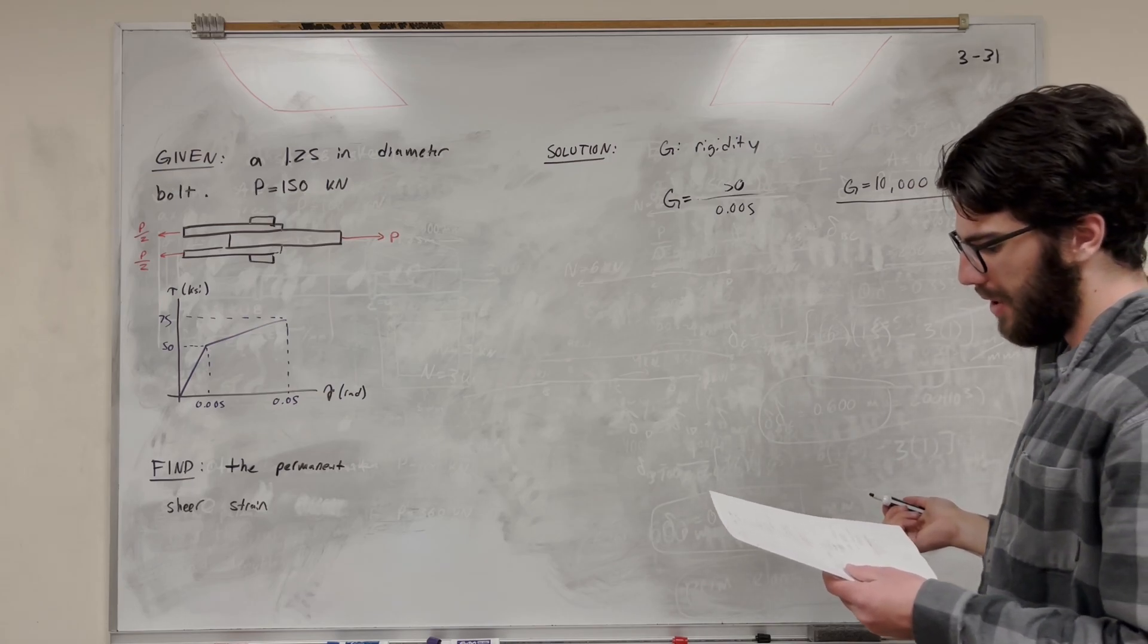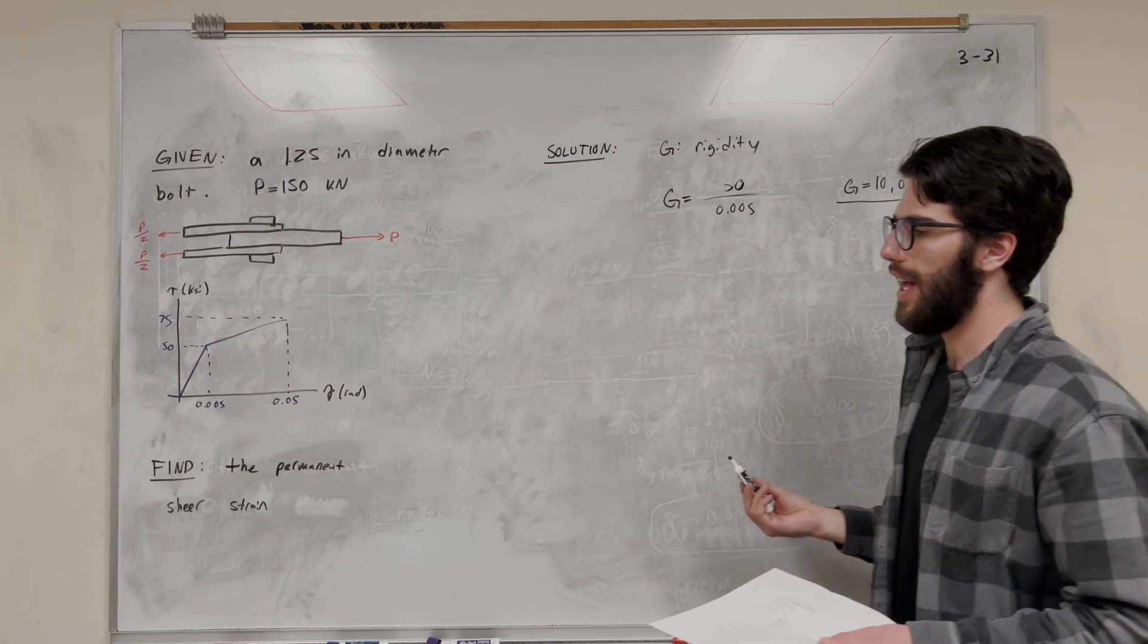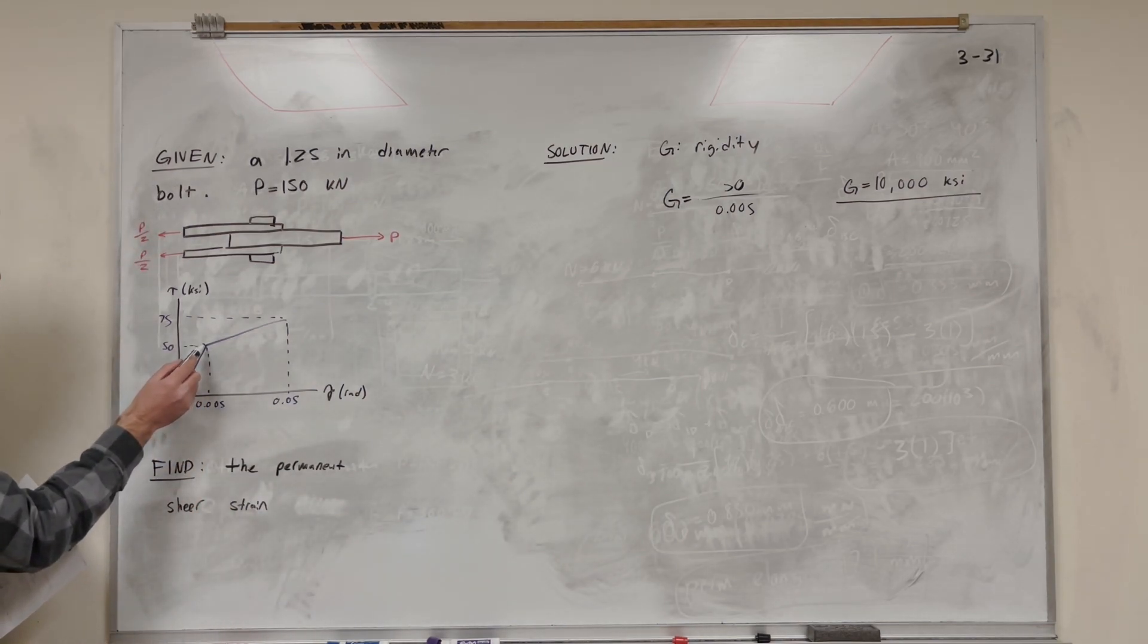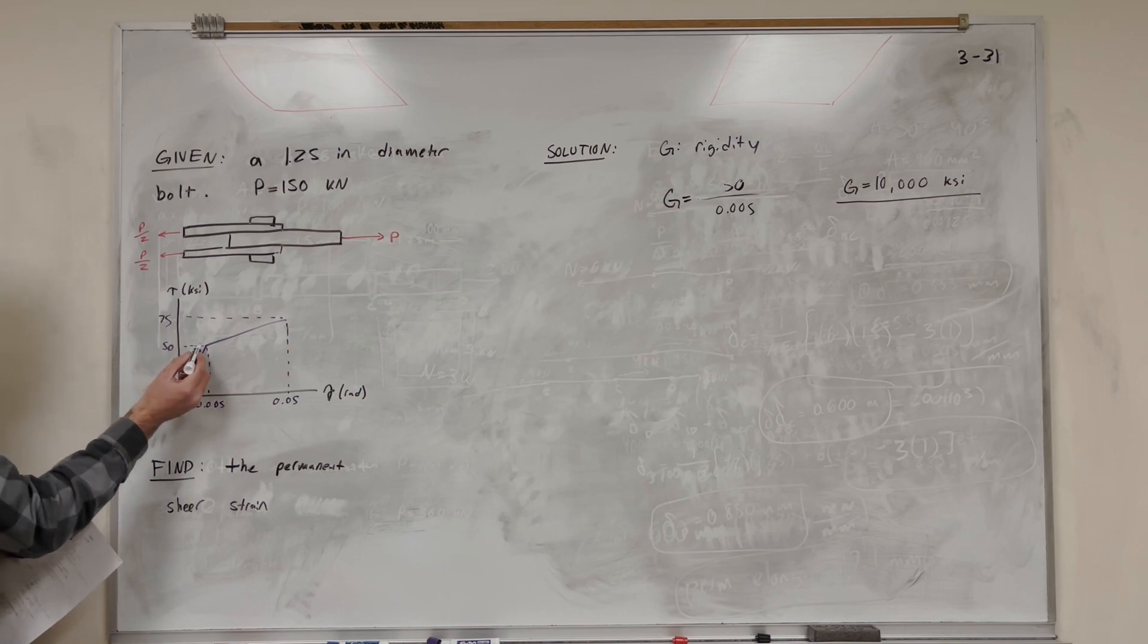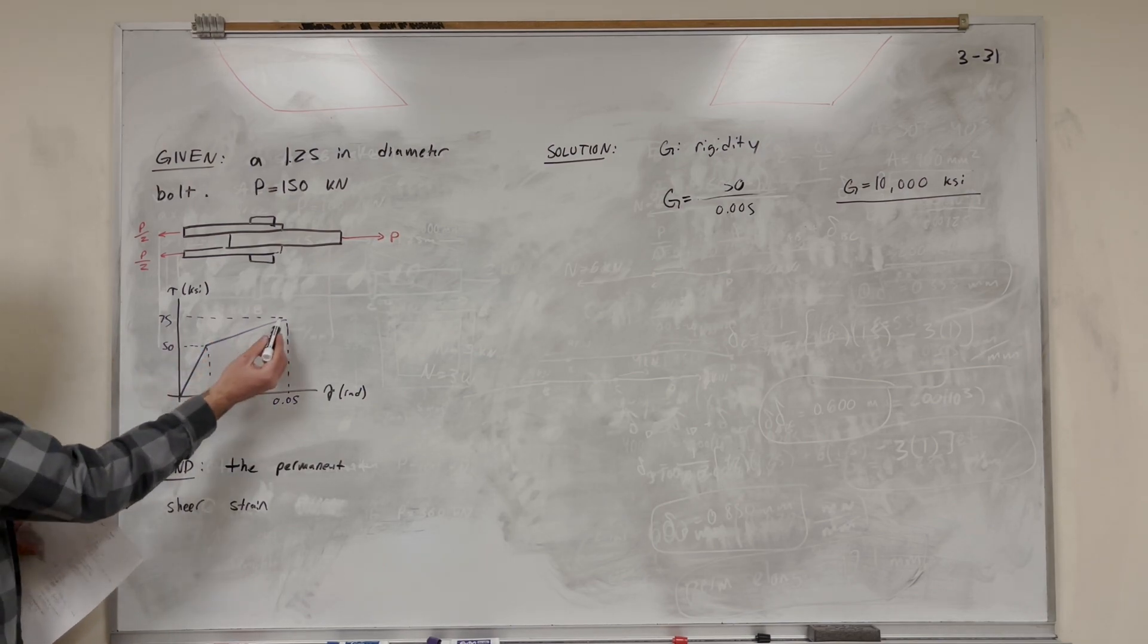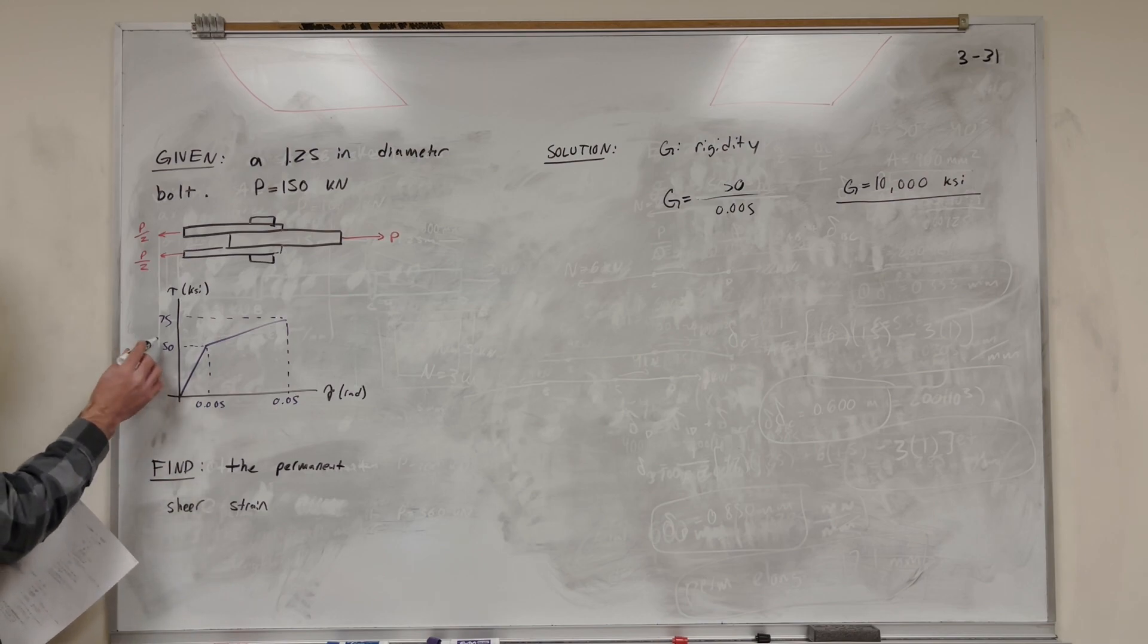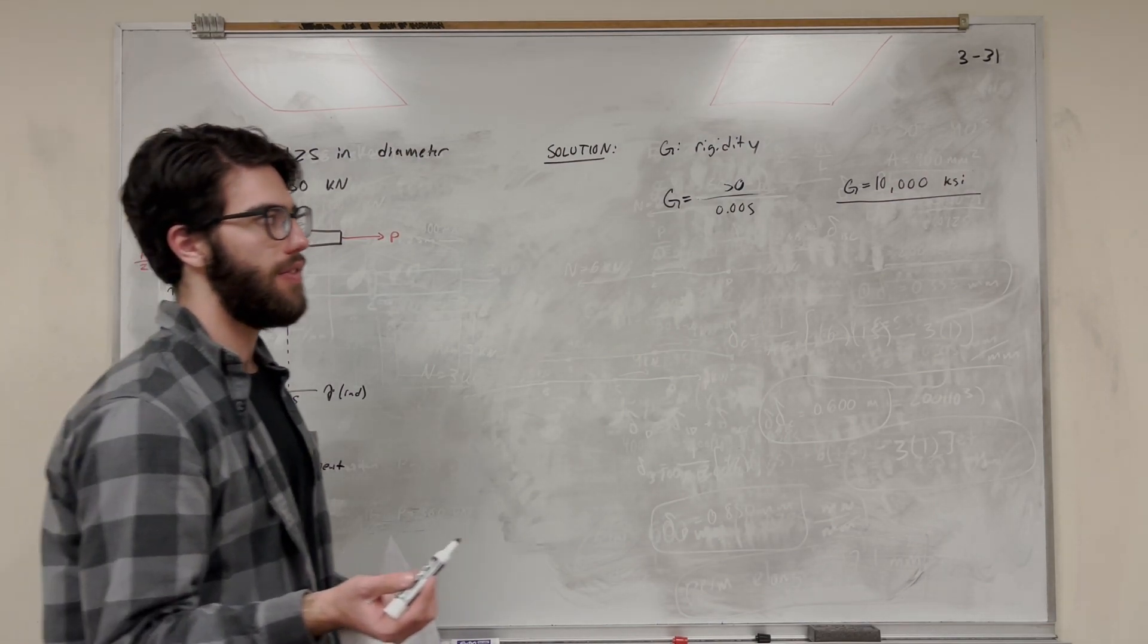So what do we need to find next? We need to find if we're in that elastic phase or if we're not, because the permanent shear strain is only going to happen if we pass this phase here. So basically, if our shear stress passes 50, if we're anywhere in this range, when we let go, we're not going to go all the way back to 0 on our strain. We're going to go back to somewhere greater than 0, and that's where the shear stress comes in. So we need to find out if our shear stress is greater than 50.